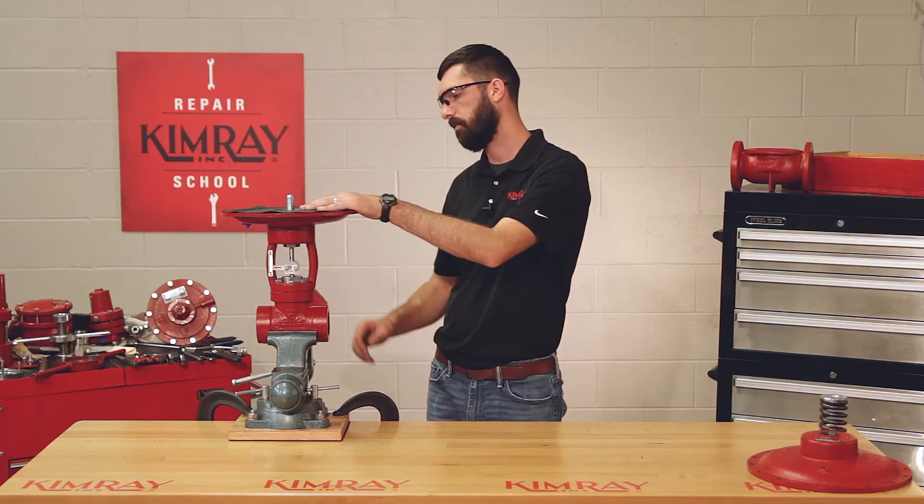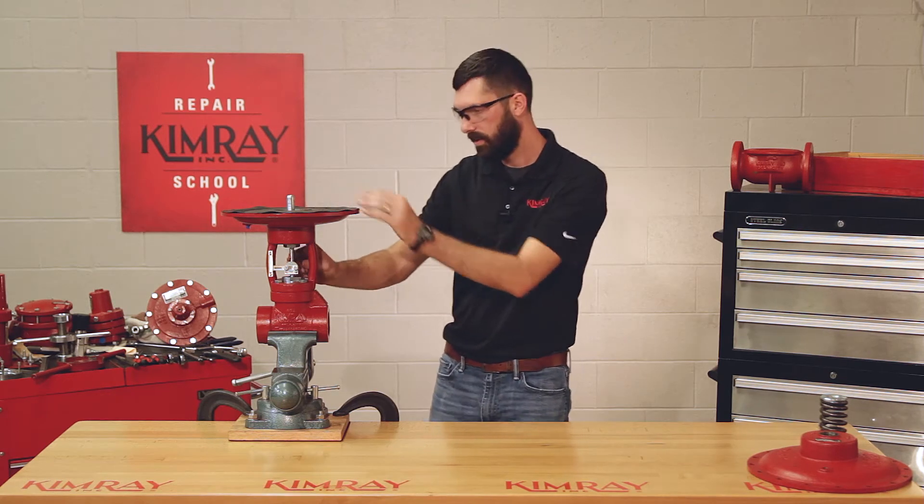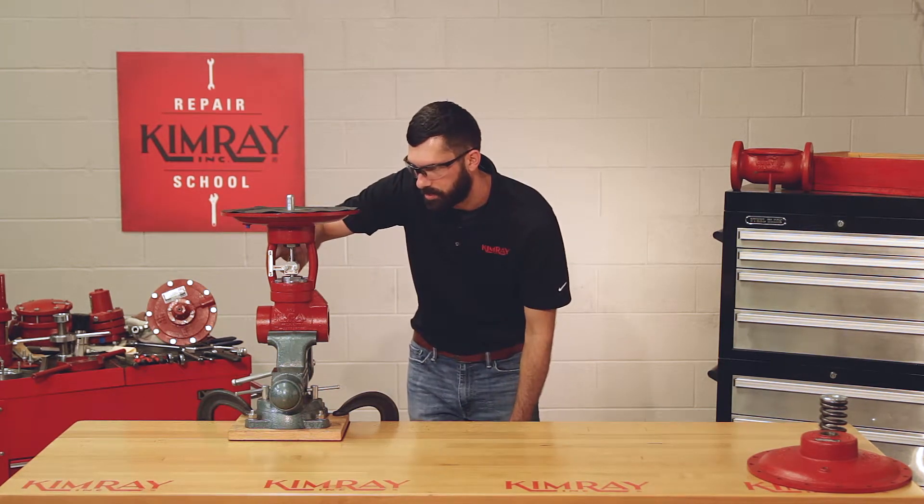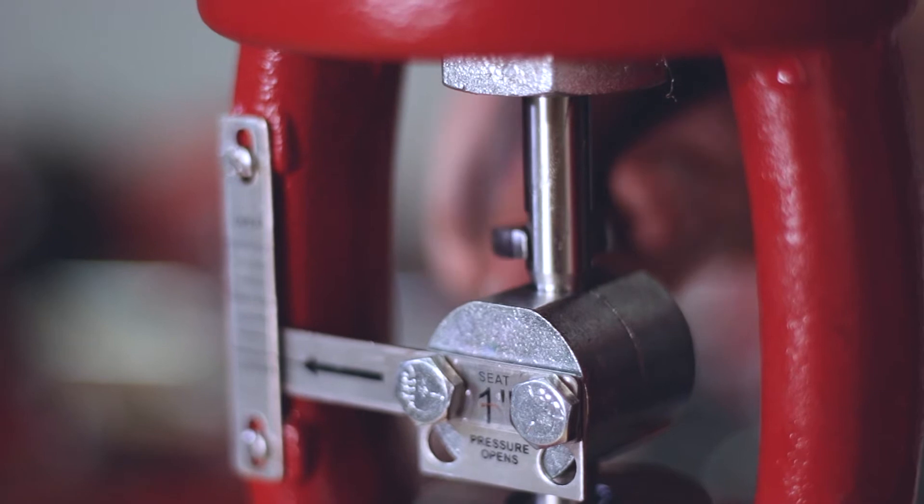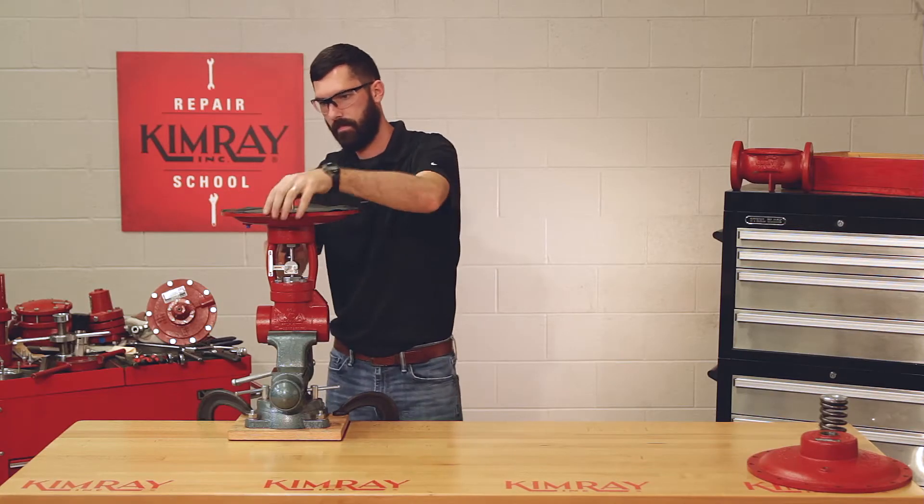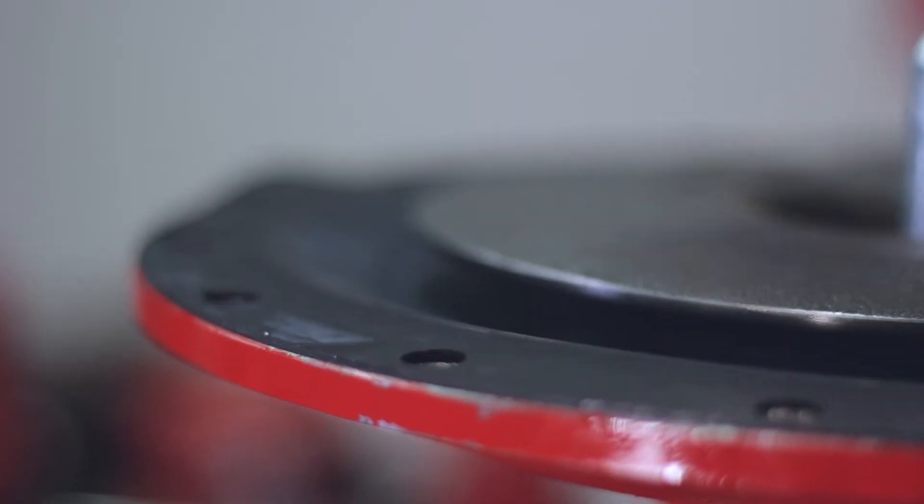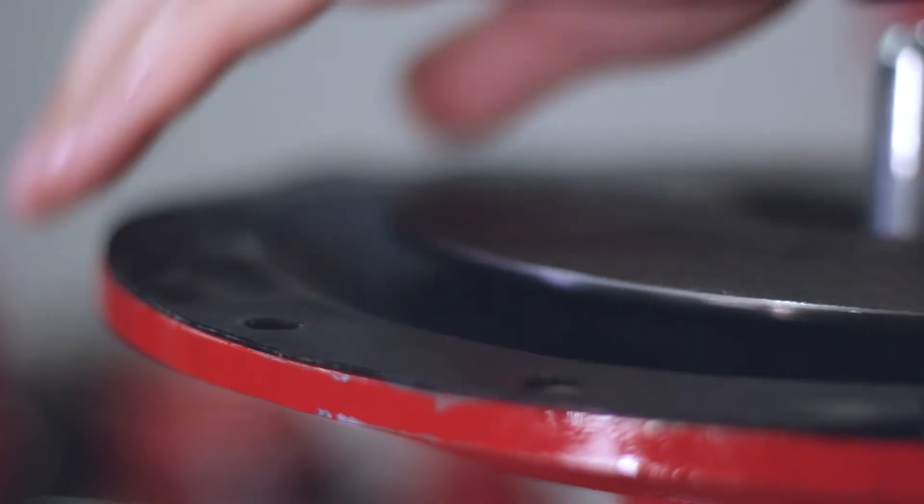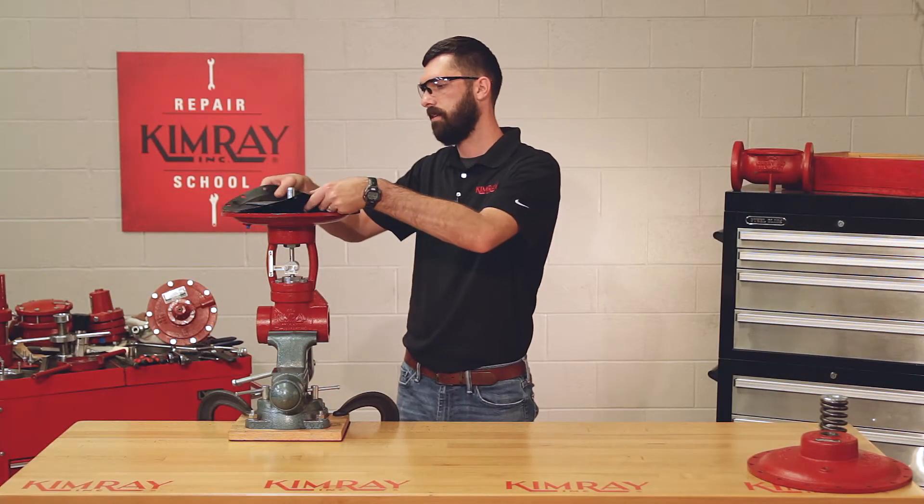Next, you'll unthread your diaphragm plate from your upper stem. There are two flats on your upper stem where you can put a wrench to stabilize it while you unthread the diaphragm. Now you'll remove your diaphragm and diaphragm plate.